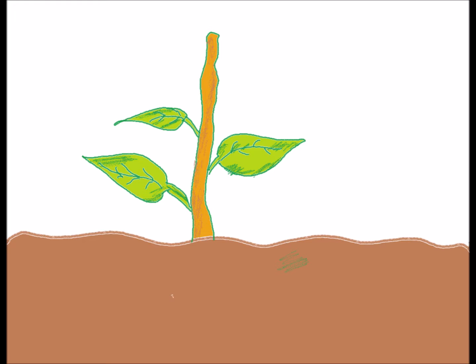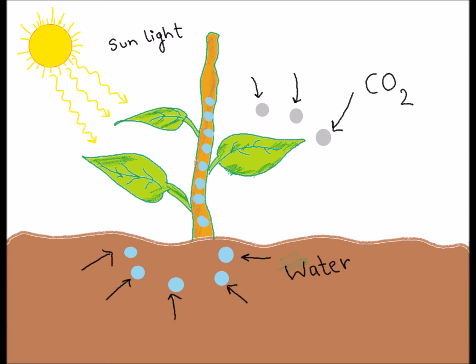Leaves make food for plants. Plants take water from the ground and carbon dioxide from the air, and use sunlight to turn water and carbon dioxide into oxygen and glucose.